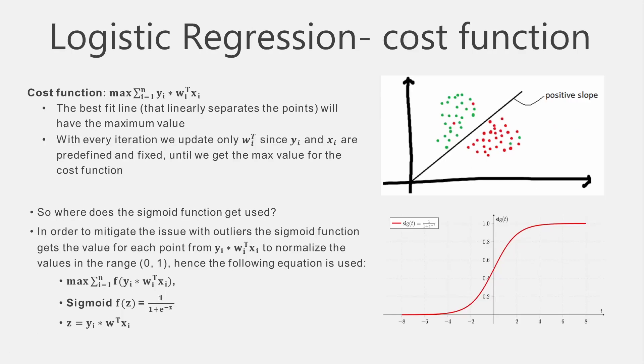The cost function works by maximizing the sum of all logit function outcomes for the data points in our data set. If we have one million records, we will have one million logit function outcomes representing the classification of each record, and at the end all of them are summed up — the higher the sum, the better the classification. This result is used to decide where the best fit line should be placed to separate the two classes, and on each iteration we update the omega value, since y is always minus one or plus one and x is the value of the record.